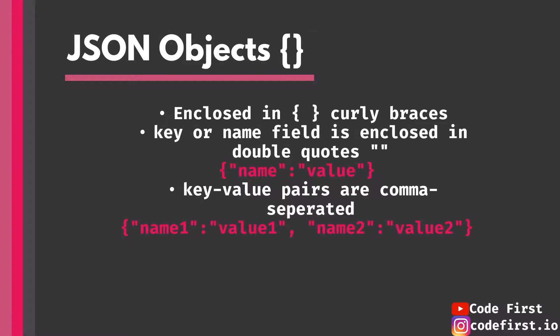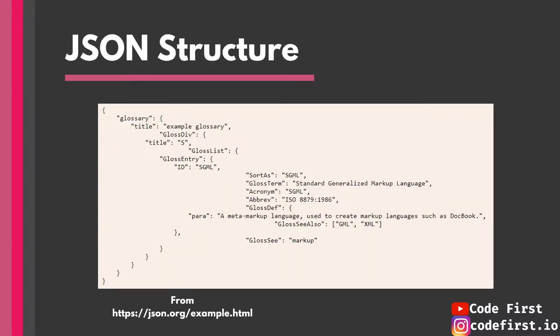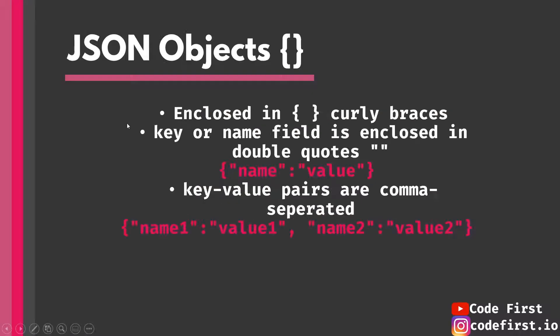For JSON objects: they are enclosed in curly braces. The key or name field is enclosed in double quotes. Key-value pairs are comma separated — an object can have a series of key-value pairs, separated by commas. So 'name one, value one' is one key-value pair, then a comma, then another key-value pair. That's pretty much all you need to know about JSON objects.